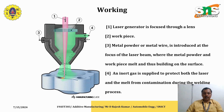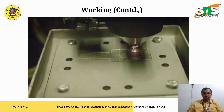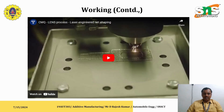The metal powder and the workpiece melt, building up the surface. An inert gas is supplied to protect both the laser and the melt from contamination during the welding process, as there is a chance of oxidation or reaction with environmental gases. To ensure a quality product, this process is carried out in a vacuum chamber.